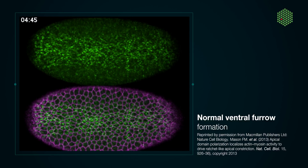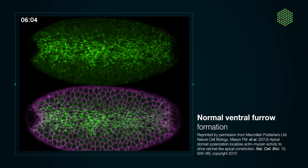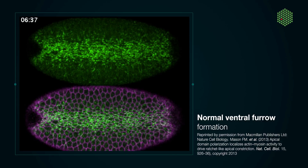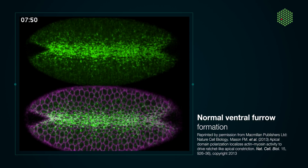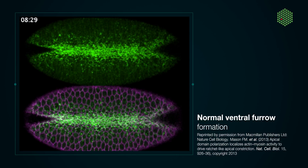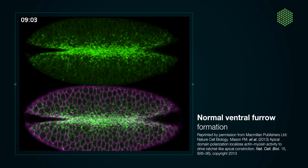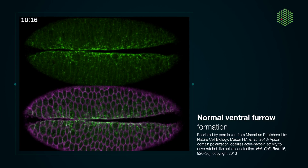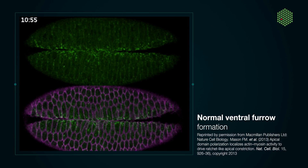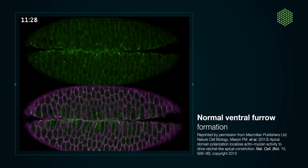During this process, the cells in the ventral axis of the embryo start to change the geometry of their apical surface and their shape. This results in the inward folding of the tissue, giving rise to the mesodermal germ layer.